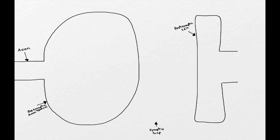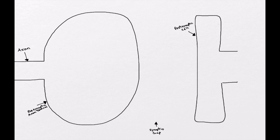Before we talk about the dopaminergic synapse in detail, we'll start with the basic components of a functional synapse. Here we have an axon that feeds into the presynaptic axon terminal, which is the large bubble on the left. On the right is a model of a postsynaptic cell, and down in the middle we have our synaptic gap.